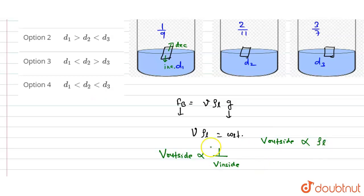And so we see here that the density is given as 1/9, and this is 2/11, and this is 3/7. As the block floats, this is 1/9, this is 2/11, and this is 3/7.